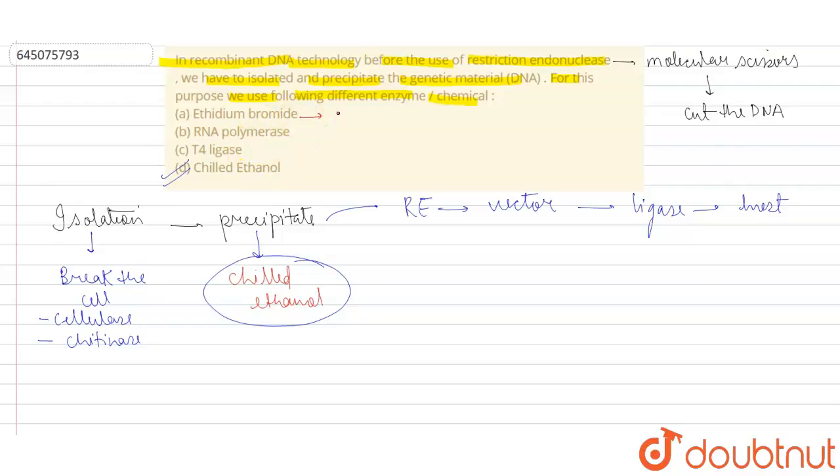But the basic chemical is chilled ethanol. Whereas when we talk about other chemicals, ethidium bromide is basically used in the agarose gel electrophoresis, and this chemical acts as an intercalating agent which can be used to stain the DNA, so this can't be the correct option. When we talk about RNA polymerase, it is used for transcription, can't be a correct option. And T4 ligase is used in later stages, so this can't be the option.